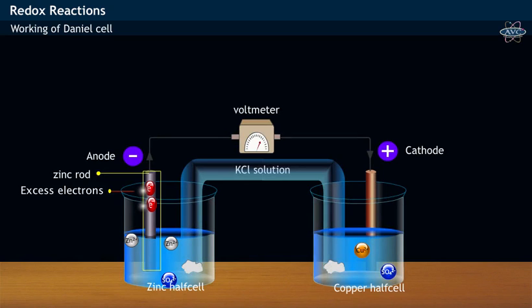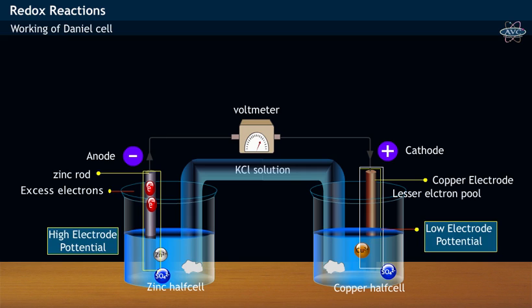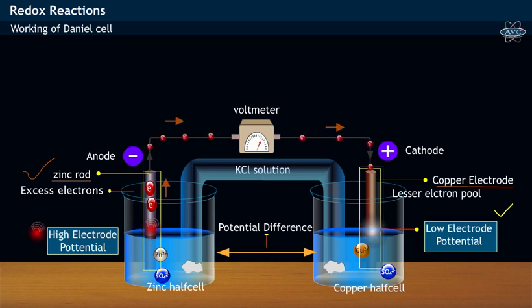Zinc electrode with excess electrons has got high electrode potential, while copper with less electron pool has got lower electrode potential. As a result of this, the potential difference arises and thus, the electrons tend to flow from the region of high potential, i.e. zinc electrode, to the region of lower potential, i.e. copper electrode.